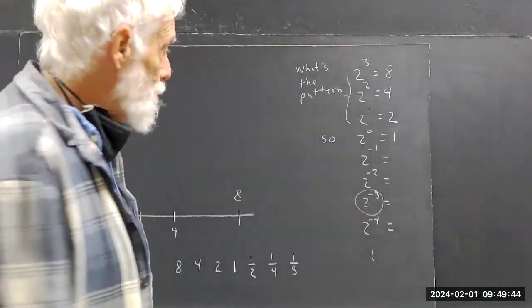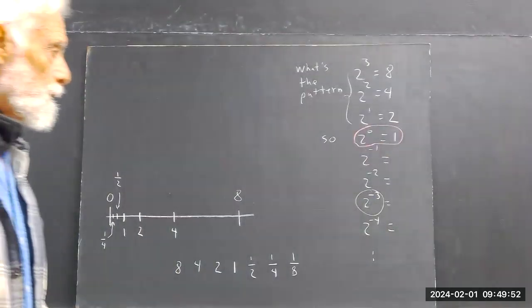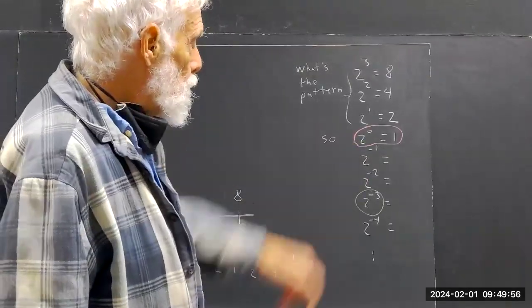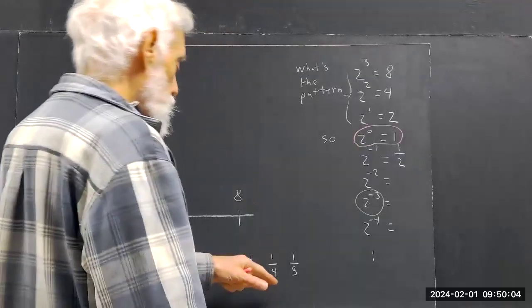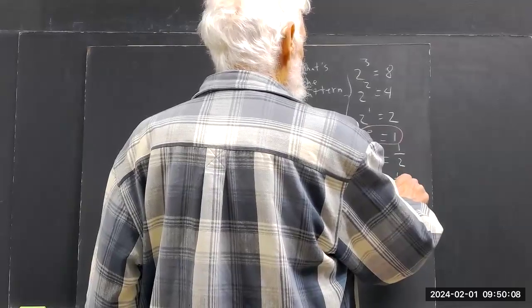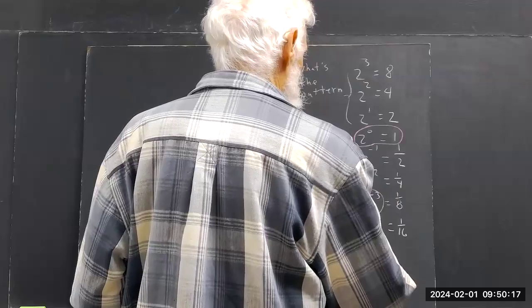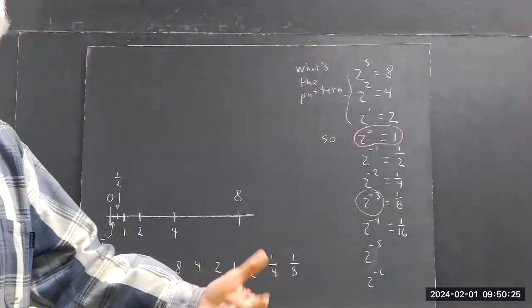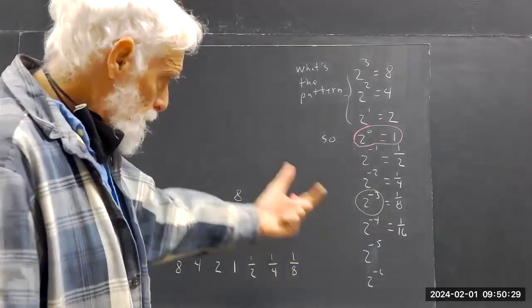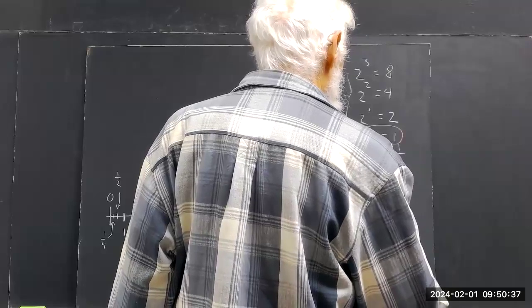The calculator also knows the definition of the zero exponent pattern. Two to the negative one is one over two. Half of one half is one fourth, half of one fourth is one eighth, half of one eighth is one sixteenth, and we can continue. Two to the negative five is one over thirty-two, two to the negative six is one over sixty-four. The pattern just goes on forever.